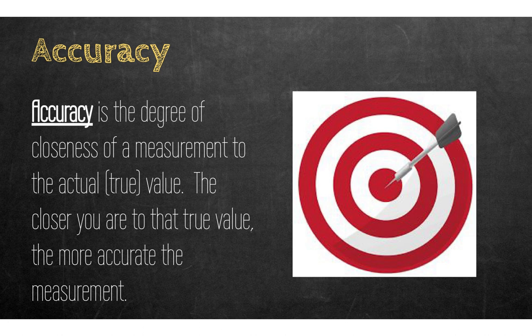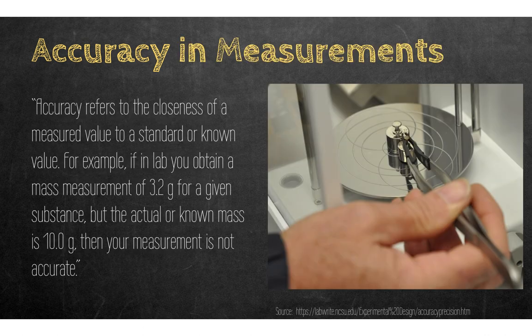Let's first define accuracy. Accuracy is the degree of closeness of a measurement to the actual or true value. Thinking about the darts analogy, the objective is to hit the bullseye, which is worth the most points. If I am accurate, it means I have hit the target I'm trying to get.